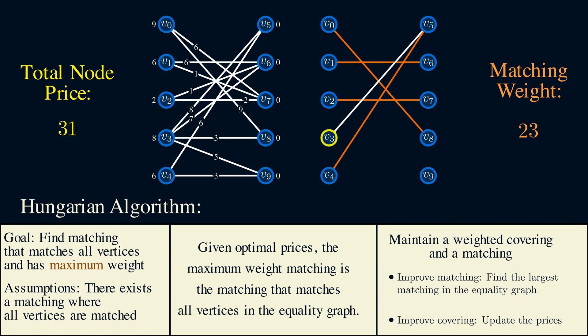Vertex 3 is not matched currently. Also, vertex 9 on the other side is not matched. If there's an augmenting path from 3 to 9, which is a path that alternates between being in and out of the matching, then we can increase the size of our matching. We can see here that the only path out of 3 ends in a dead end. So we need to change the node prices to include more edges into the equality graph.